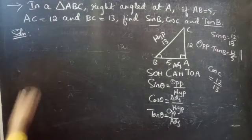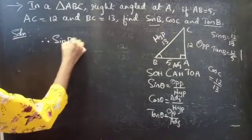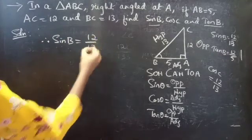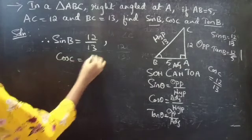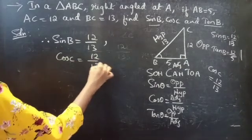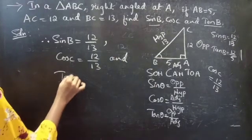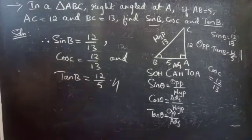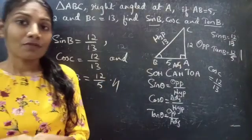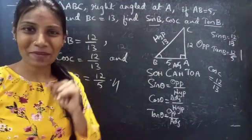Therefore: sine B equals 12 by 13, cos C equals 12 by 13, and tan B equals 12 by 5. We have seen this problem in this video — hope you understand. We will see you in the next video, until then bye bye.